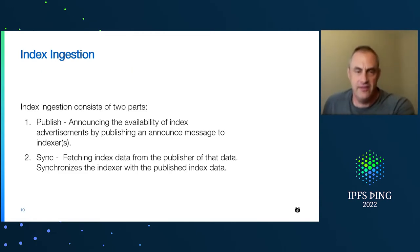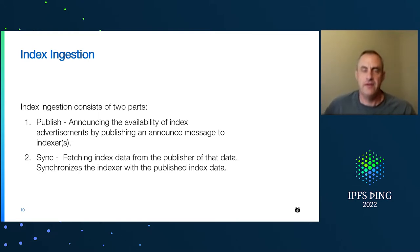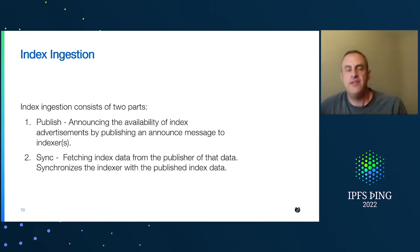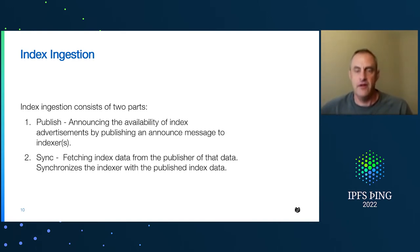Let's talk a little bit more about the ingest. Ingest really consists of two parts: the publishing — the announcing of the availability of more content to index — and then the sync, which is actually where the indexer is pulling in that content and creating the index for that content. It's called sync because we're basically synchronizing up to the latest state in a chain of advertisements, which are the records of content that are available.